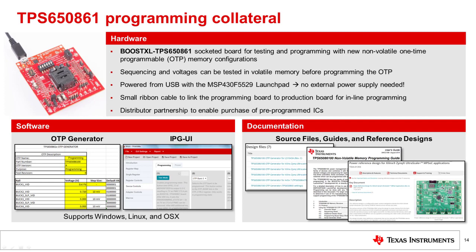This slide contains a list and descriptions of the programming collateral available for the TPS-650861. From a hardware perspective, the BoostXL-TPS-650861 socketed programming boards and MSP-430-F5529 launch pad can be ordered from the TI store, as well as samples of the TPS-650861 device. For software, there are two tools required: the OTP generator, a selection tool in Excel that converts the settings to their binary register map value, and IPGUI, which reads the output of the OTP generator and programs the PMIC samples correctly.